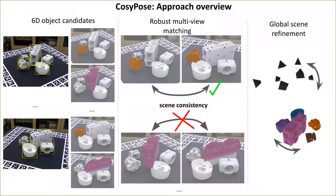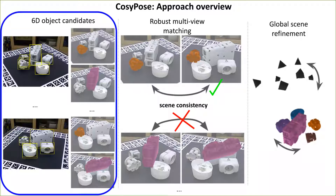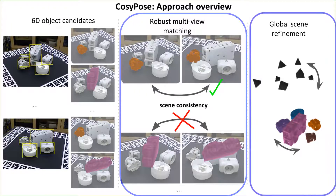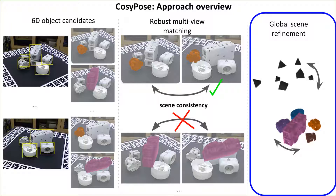We present COSI-POSE, an approach which relies on three contributions: a state-of-the-art 6D pose estimation method for generating single-view candidates; a robust multi-view matching strategy to find consistent object-level correspondences and discard inconsistent candidates; and a global scene refinement of objects and camera poses.